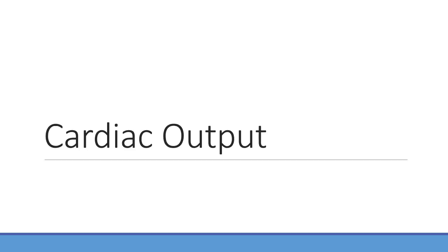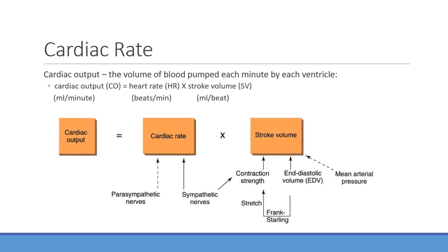We'll cover the different hormones and discuss cardiac output, which is the output of the heart — the volume of blood being pumped out from the ventricles each minute. It's regulated by a couple of different things, and we're primarily talking about the left ventricle here.